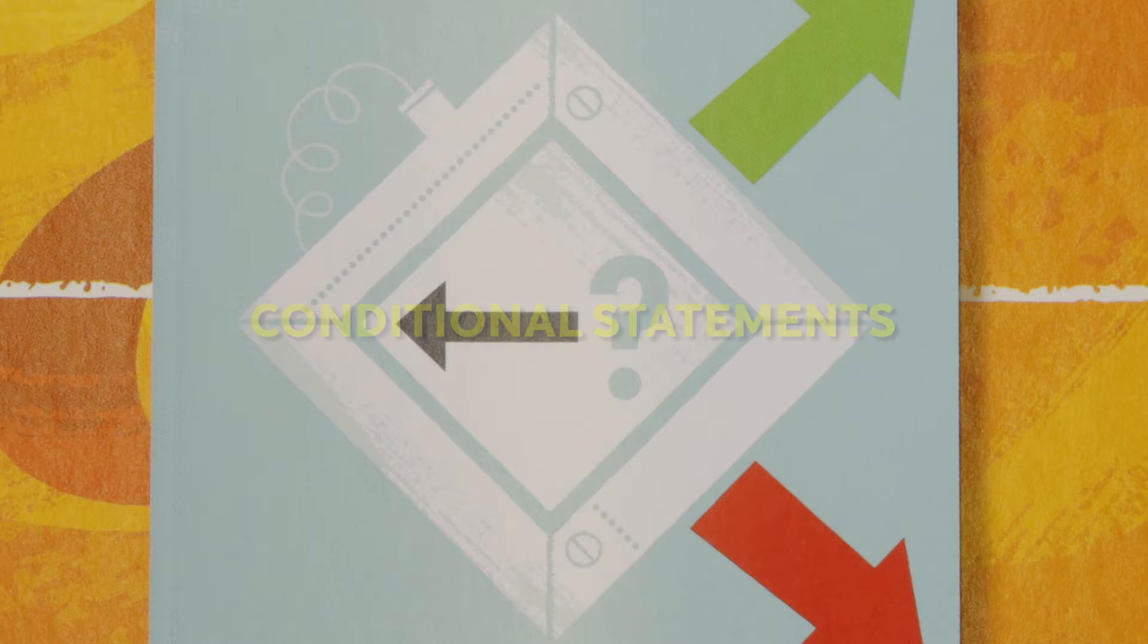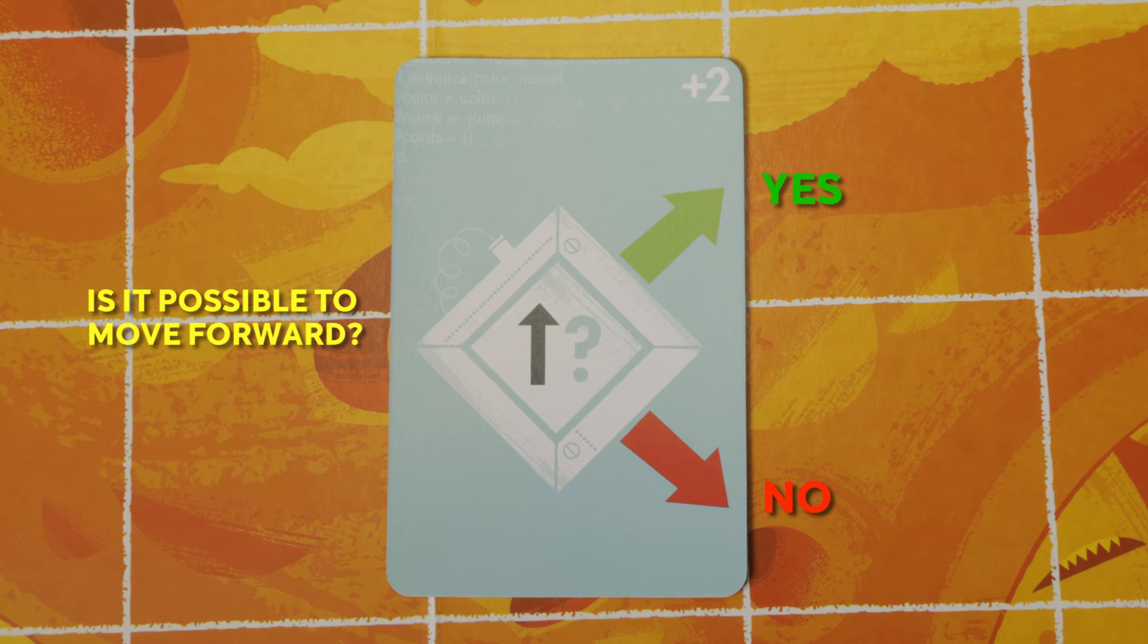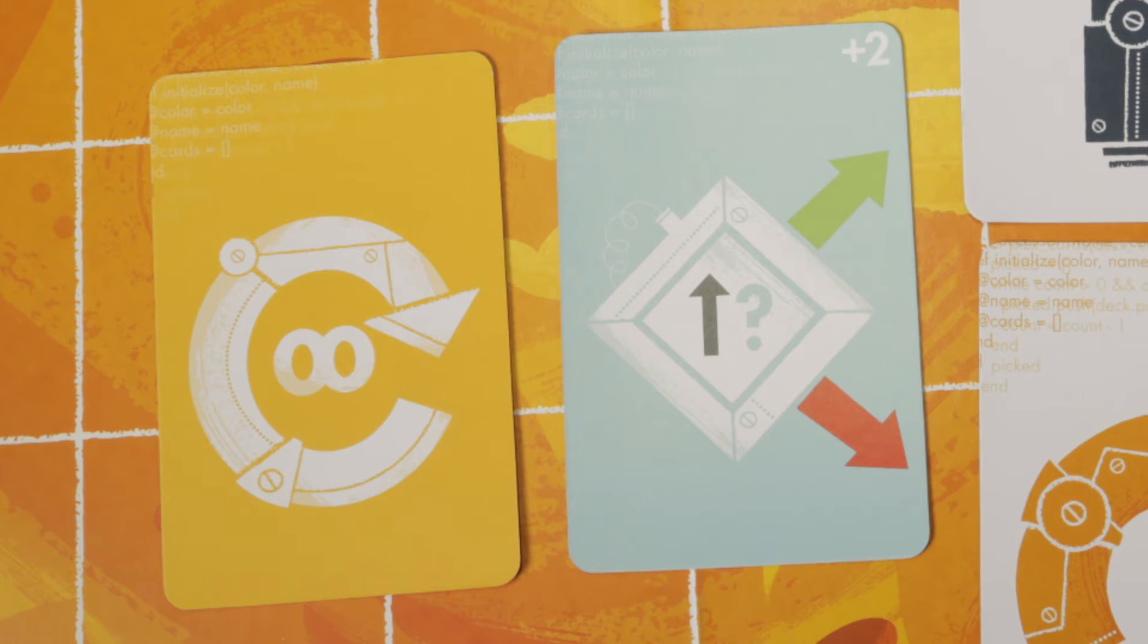With the conditional statements, your robot reacts to different situations by carrying out either the upper or lower command series. The conditional statements work best when you combine them with the repeat statements.